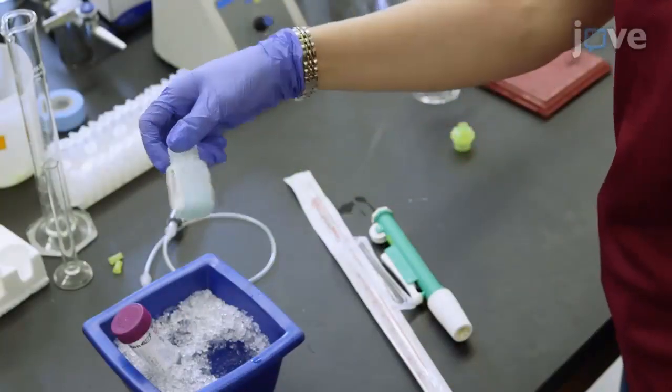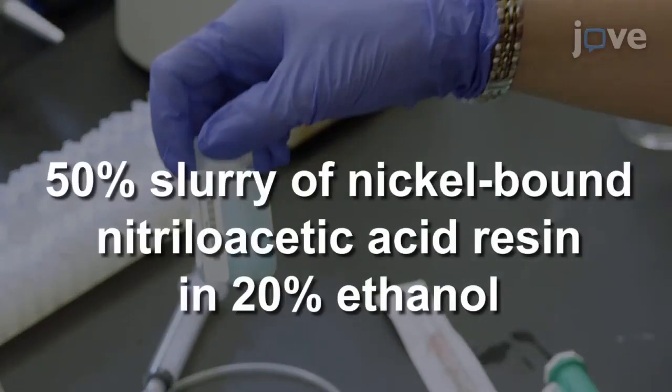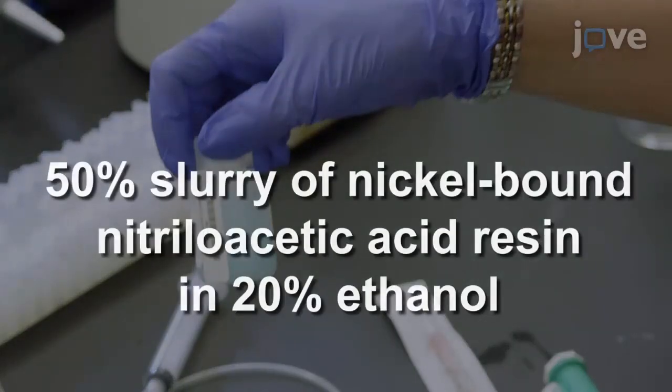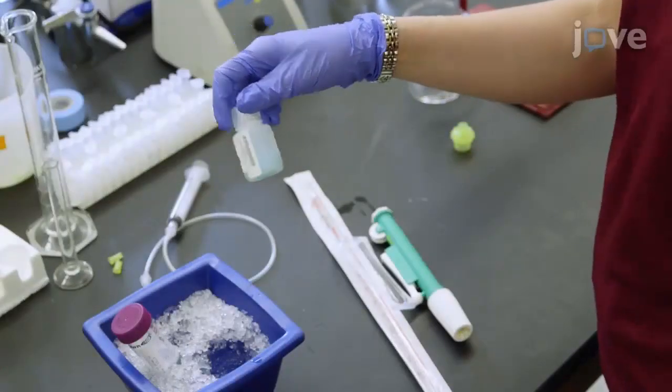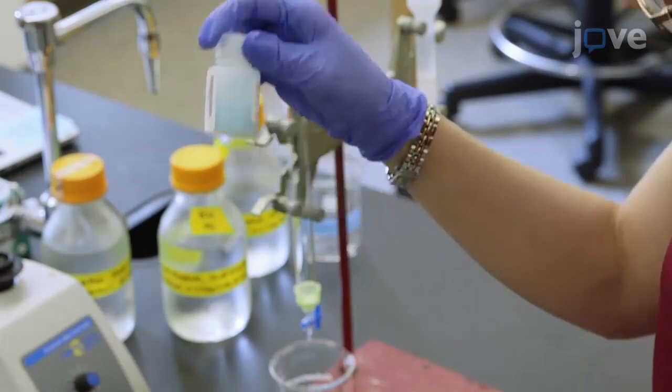Next, obtain a bottle containing a 50% slurry of nickel-bound nitriloacetic acid resin in 20% ethanol that was previously stored at 4 degrees Celsius. Gently swirl the bottle to evenly re-suspend the resin.